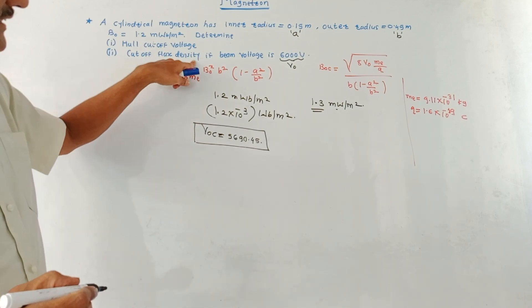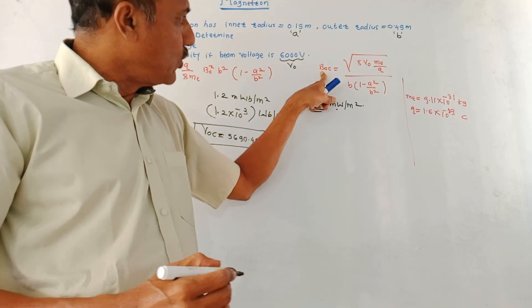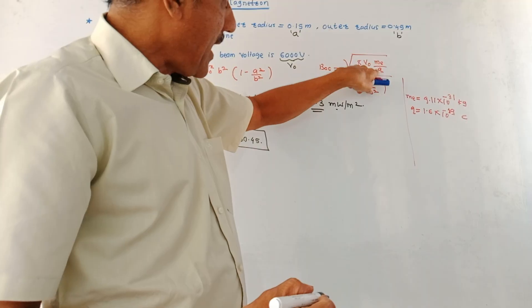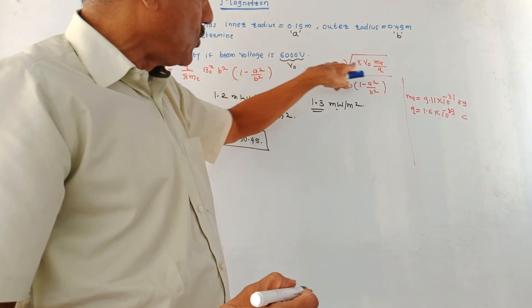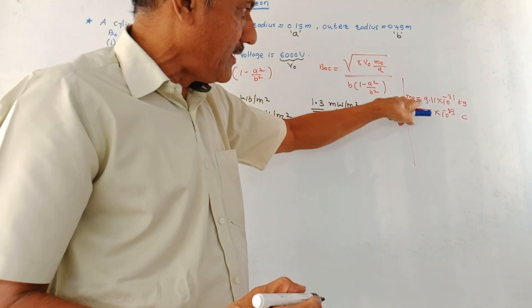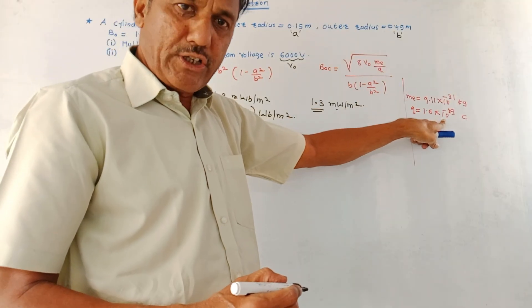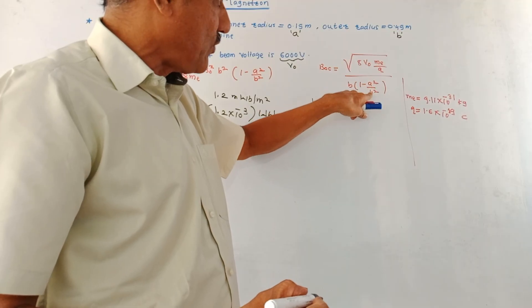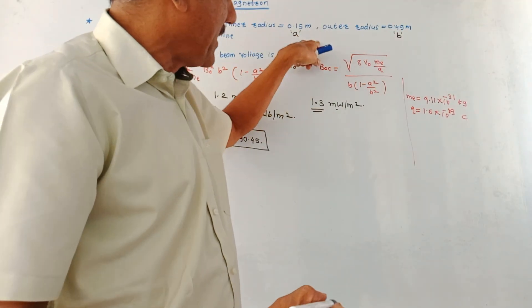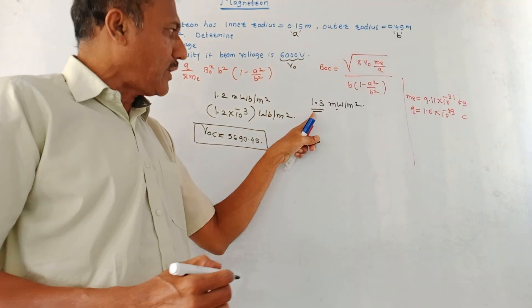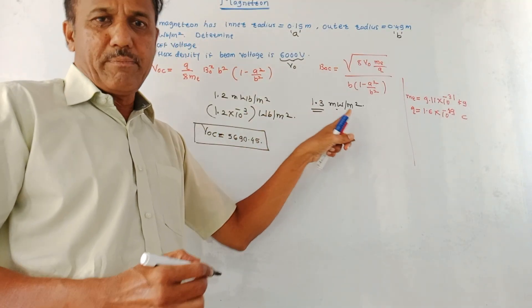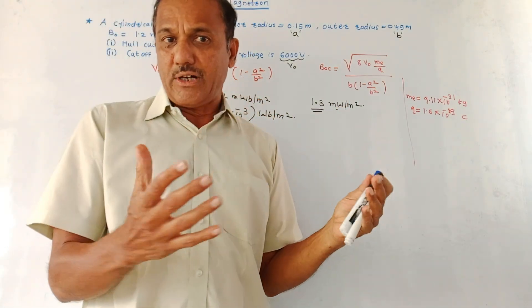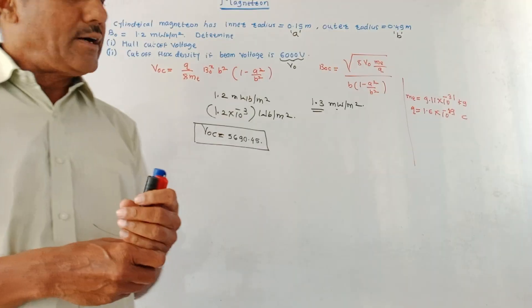For part two, the cutoff flux density B₀c is given by: B₀c = (1 / (b·(1 − a²/b²))) · square root of (8·V₀·mₑ / q). Substituting V₀ = 6000 V and the known values of a, b, mₑ, and q, the answer is B₀c = 1.3 milli-Weber per meter square. This is how to solve numericals for the cylindrical magnetron.